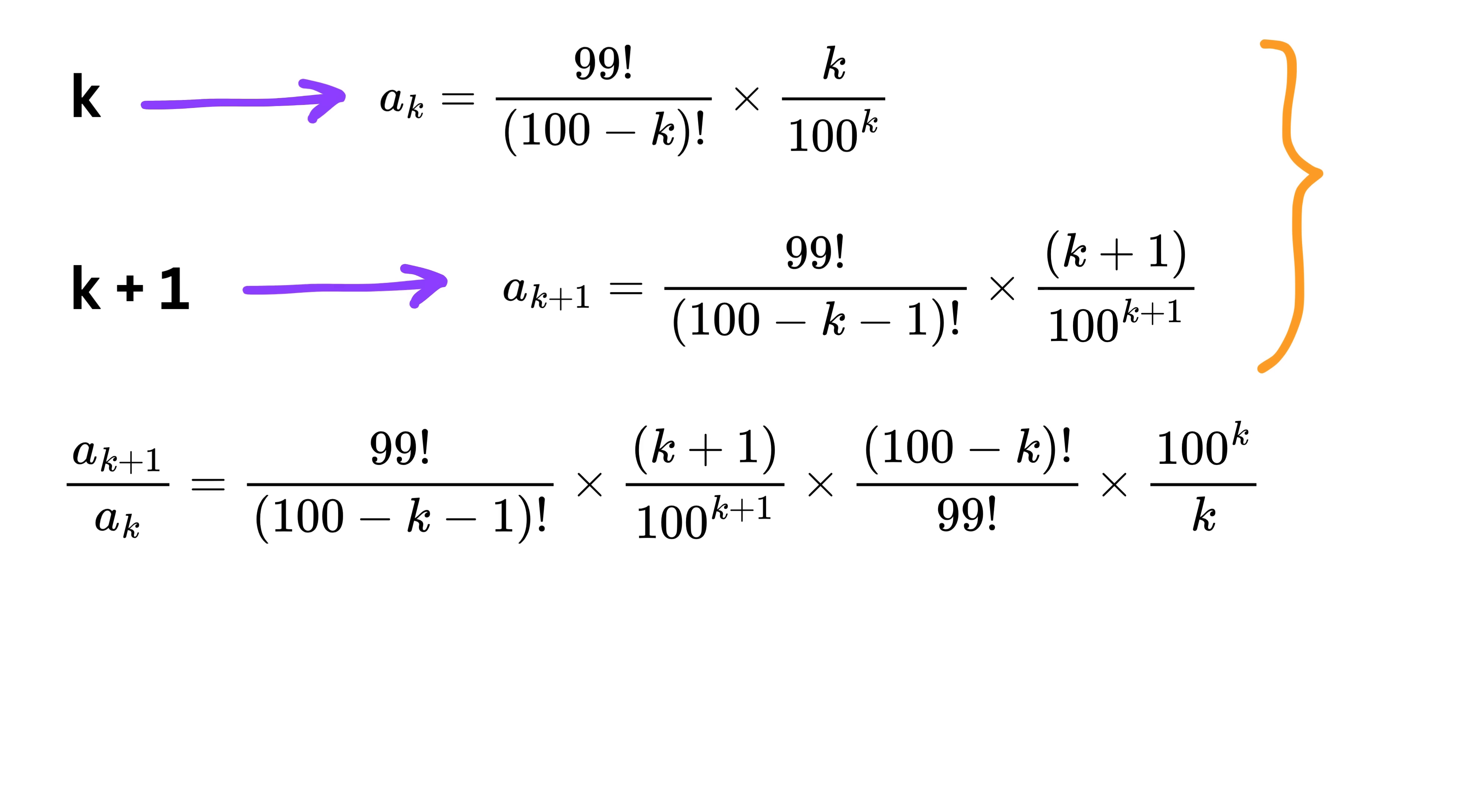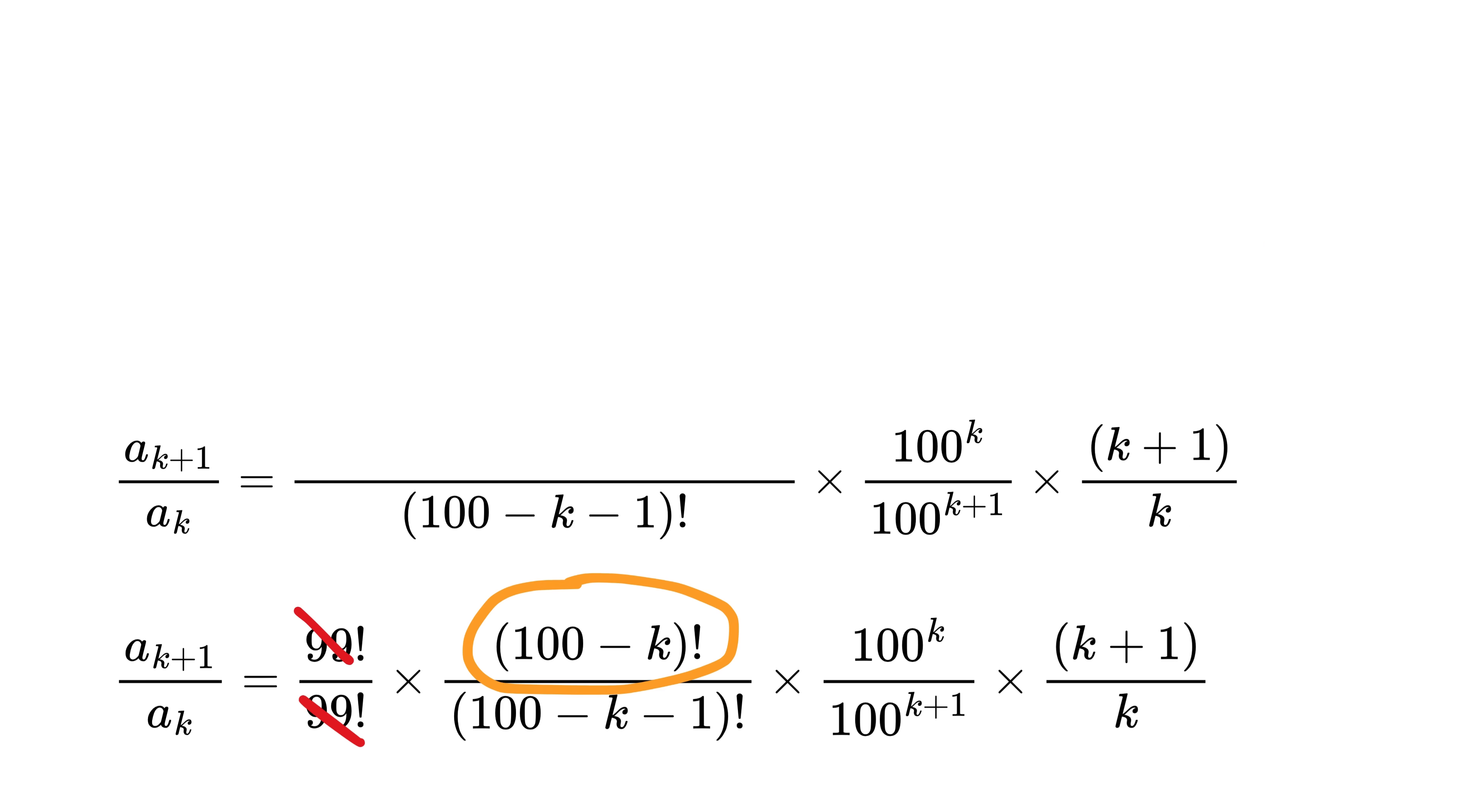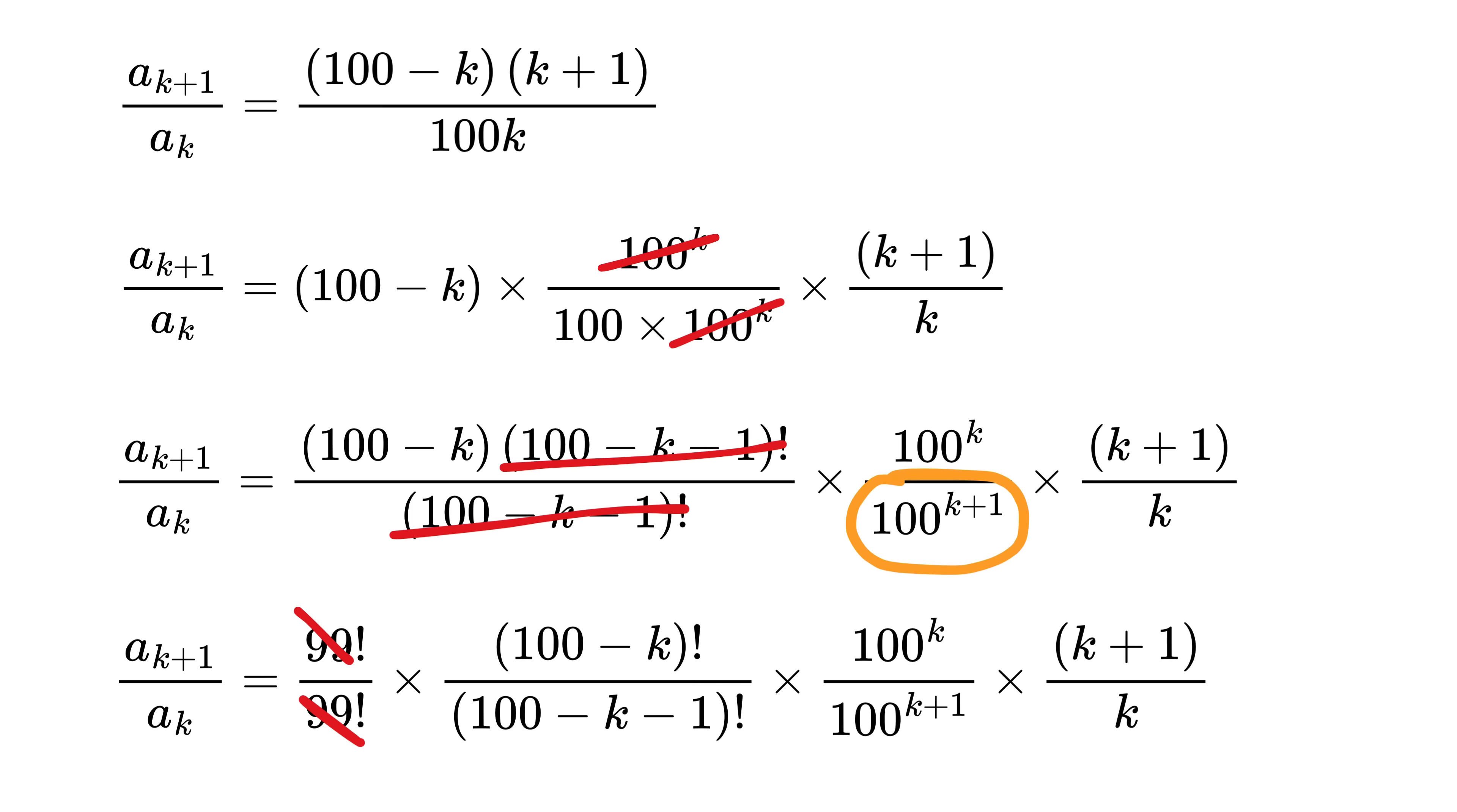This comparison tells us whether the slice keeps getting bigger or whether it starts getting smaller. First of all, let us group the like terms together, like these two, then these two, then these two, and then finally these two. 99 factorial disappears. Now 100 minus k factorial becomes 100 minus k times this factorial, so we have 100 minus k in the numerator. Now this becomes 100 raised to k times 100, and thus this cancels out.